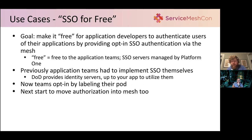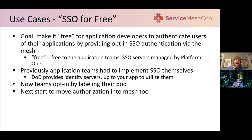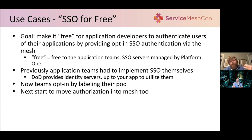I'd recommend rooting your mesh PKI in your existing PKI — that's going to make your whole life easier with respect to managing certificates. Transitioning now to the second major use case after encryption in transit: giving teams what I'd call SSO for free. How can you make it cheap for teams to onboard and start securing their applications using the service mesh?